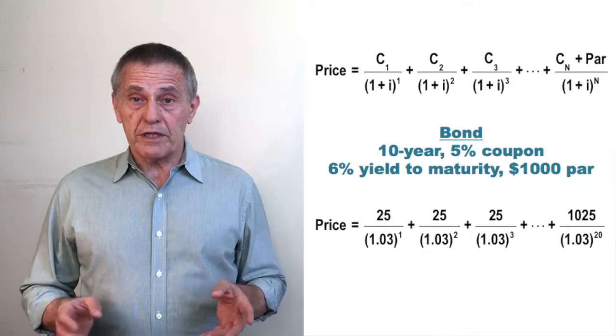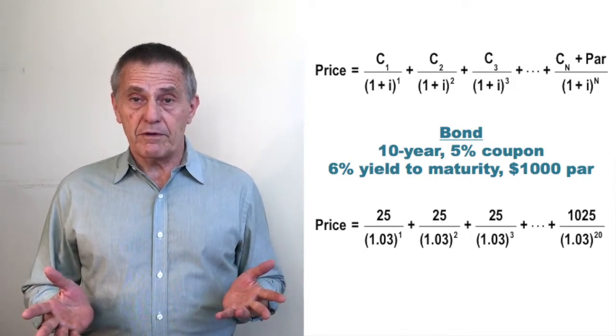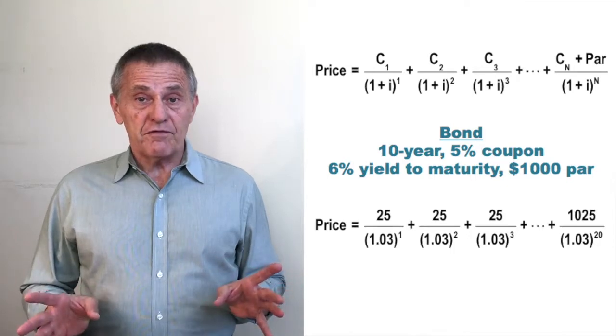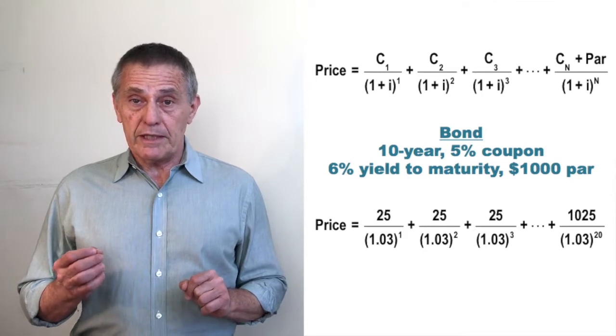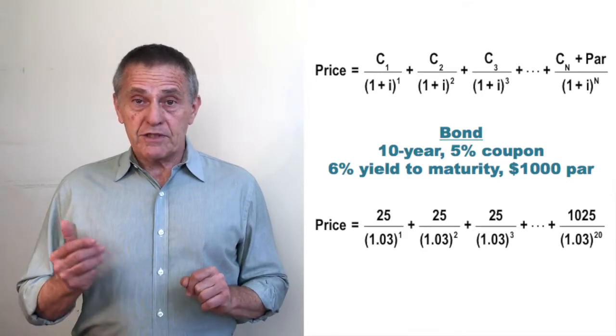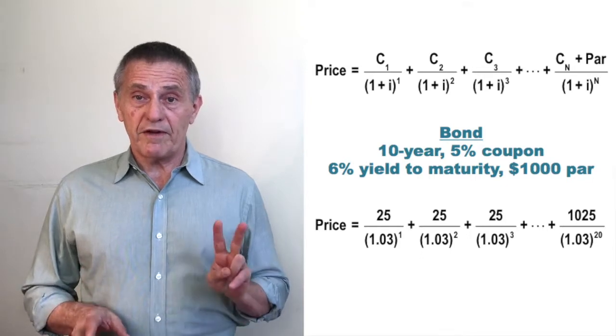And the cash flow at maturity, the final coupon plus the principal, would be $1,025. Each of the divisors is 1.03, where the .03 is 3% in decimal terms, and that's just the 6% yield to maturity that we assumed the bond was trading at, divided by 2.